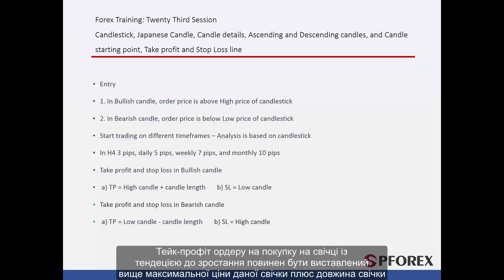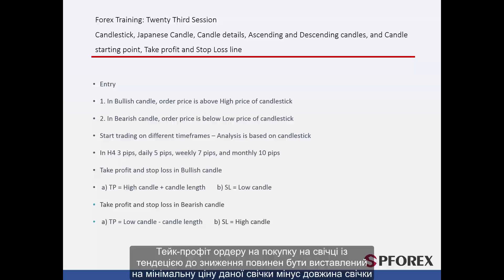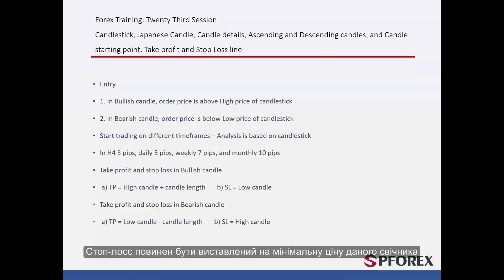The Take Profit (TP) of a buy order on a bullish candlestick would be placed above the high price of the given candle plus the length of the candle. The Stop Loss (SL) on the order should be placed at the low price of the candlestick. The TP of a sell order on bearish candlesticks should be placed at the low price of the given candle minus the length of the candle. The SL should be placed at the low price of the given candlestick.